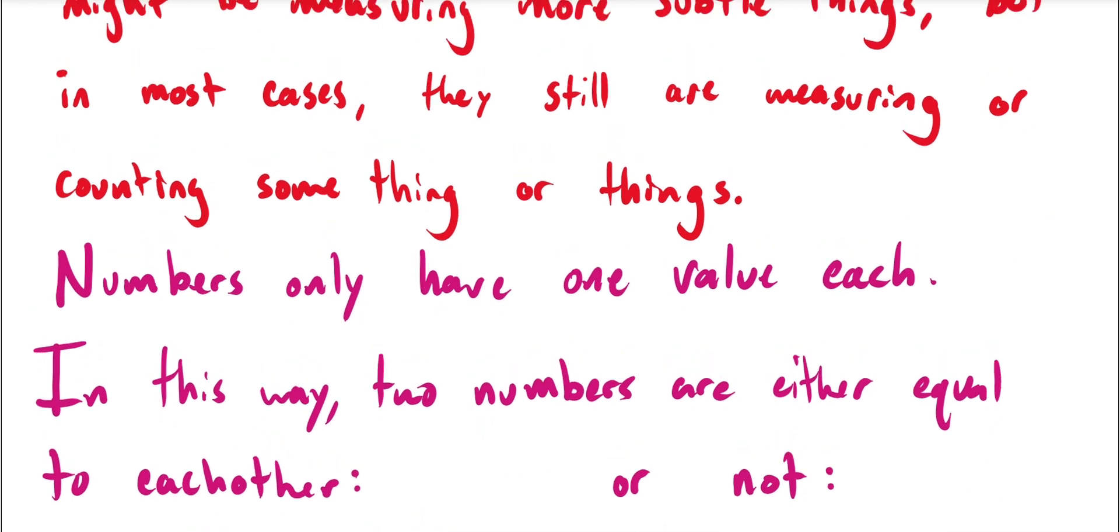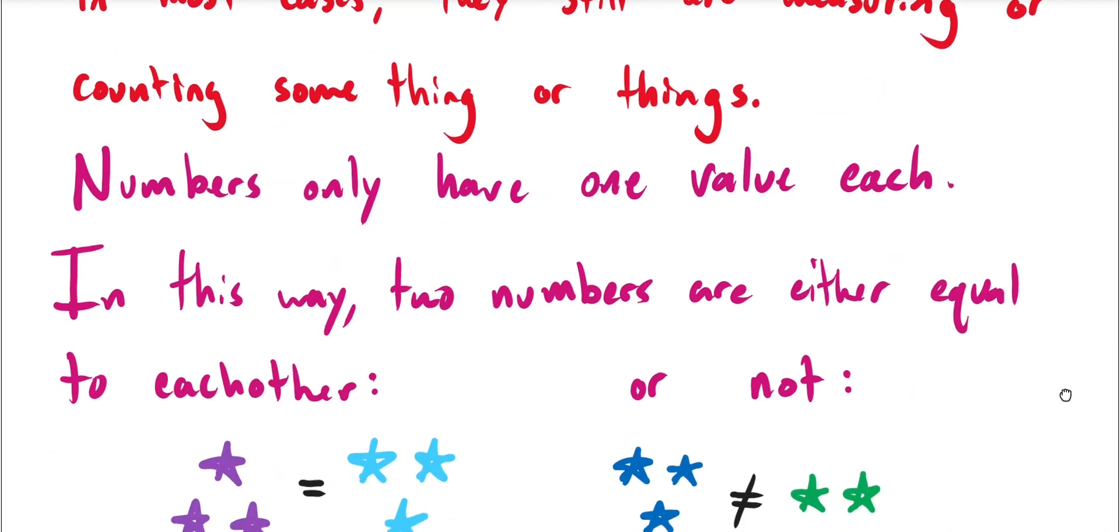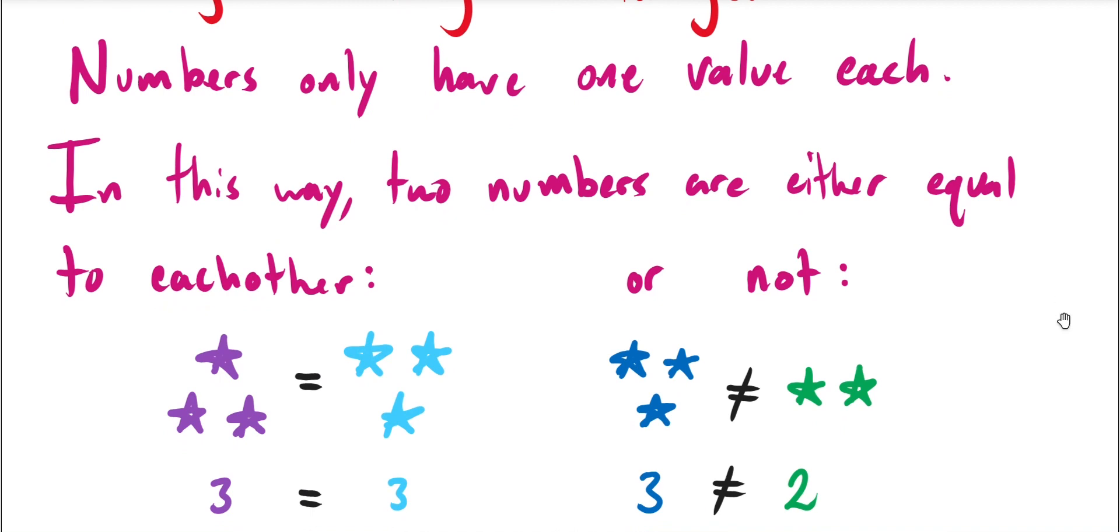So the first basic rule of numbers is that they are monovalent. They only have one value each. And so, in this way, two numbers are either equal to each other or they're not. For example, here we have a count of something. In this case, the count of purple things is equal to the count of these light blue things. And so we would say that the numbers associated with those counts are equal. In this case, to try not to keep things too trivial, I've made them different colors to say this is a count of something different. And likewise, two counts that are not equal to each other, we would write this way.